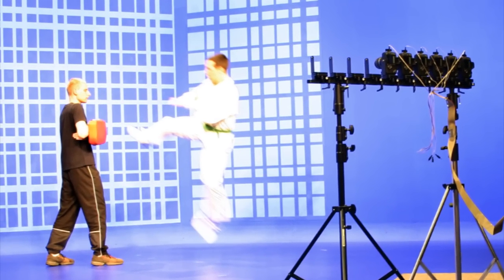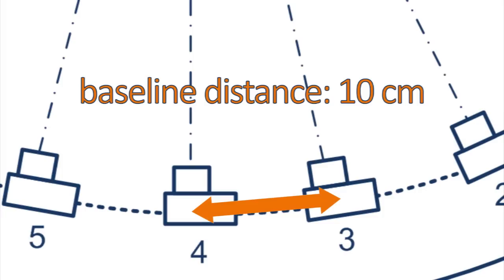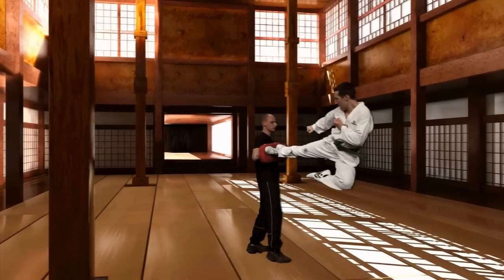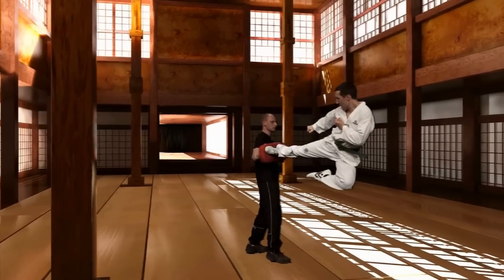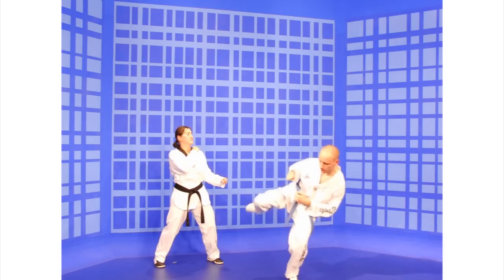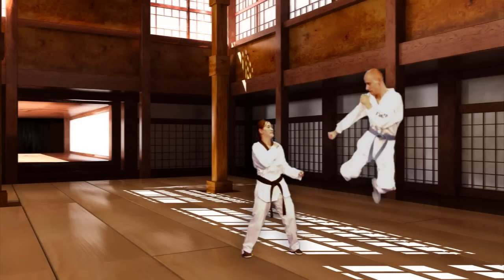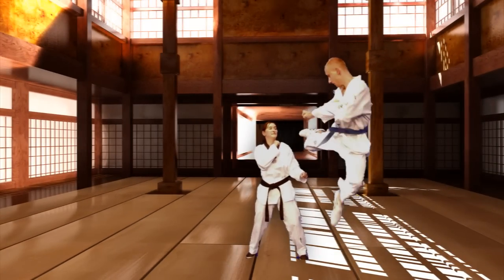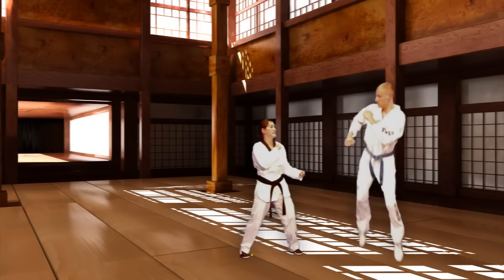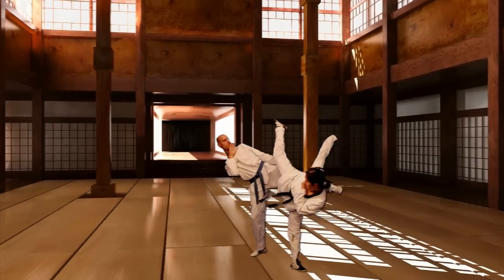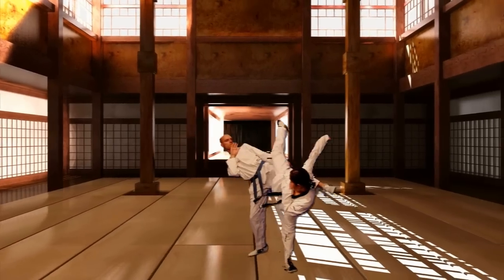At first we did only a single shot with a baseline distance of about 10 cm. Secondly, we enhanced the baseline distance to 50 cm and switched on the high-speed mode of the cameras. The result is a nice camera turn around the two scene objects. There are some mistakes in the computation which originate from inconsistent disparity maps, but the closer you put the cameras together, the better the image quality gets.